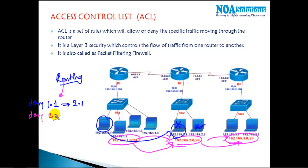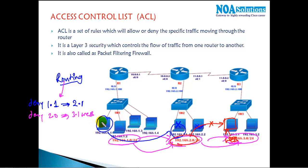Or you can write a rule like: I want to deny the 2.0 network from accessing the 3.1 web service. Assume that 3.1 is my web server and I want to ensure that any user from the 2.0 network should not access its web service only, but they can access other services from the same computer like FTP or Telnet.